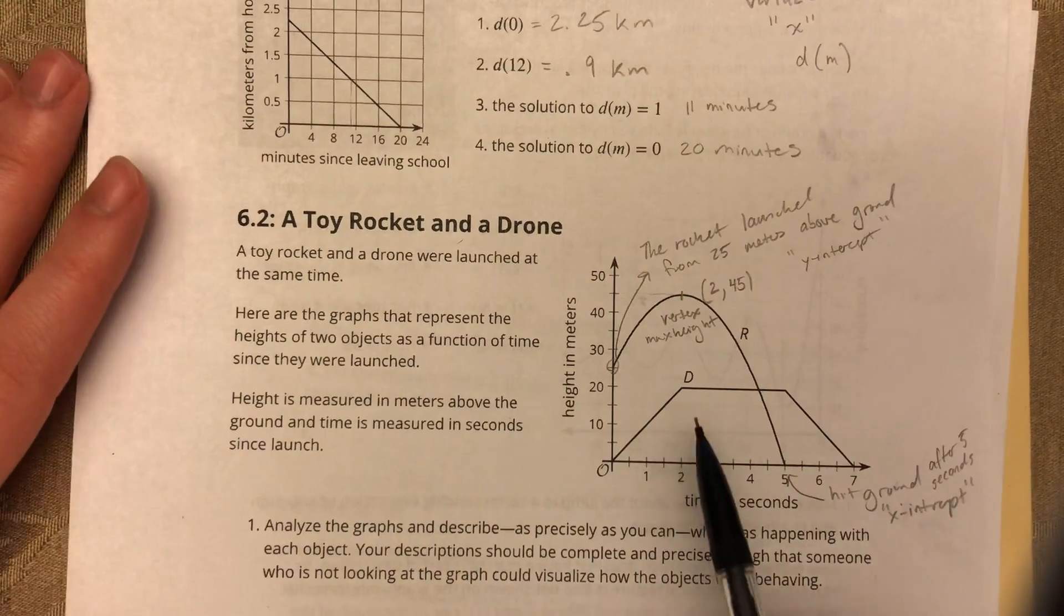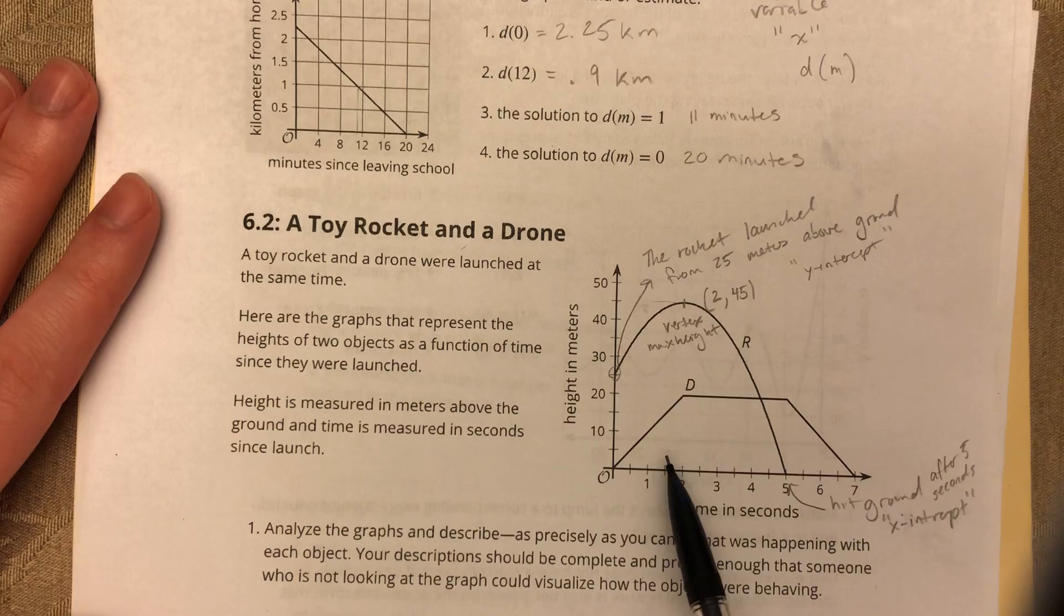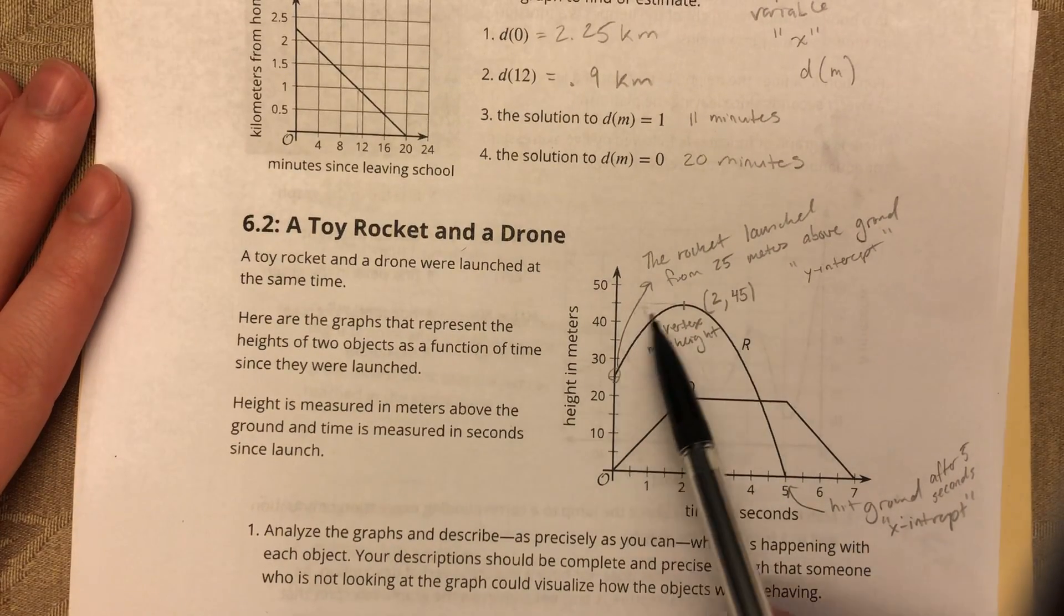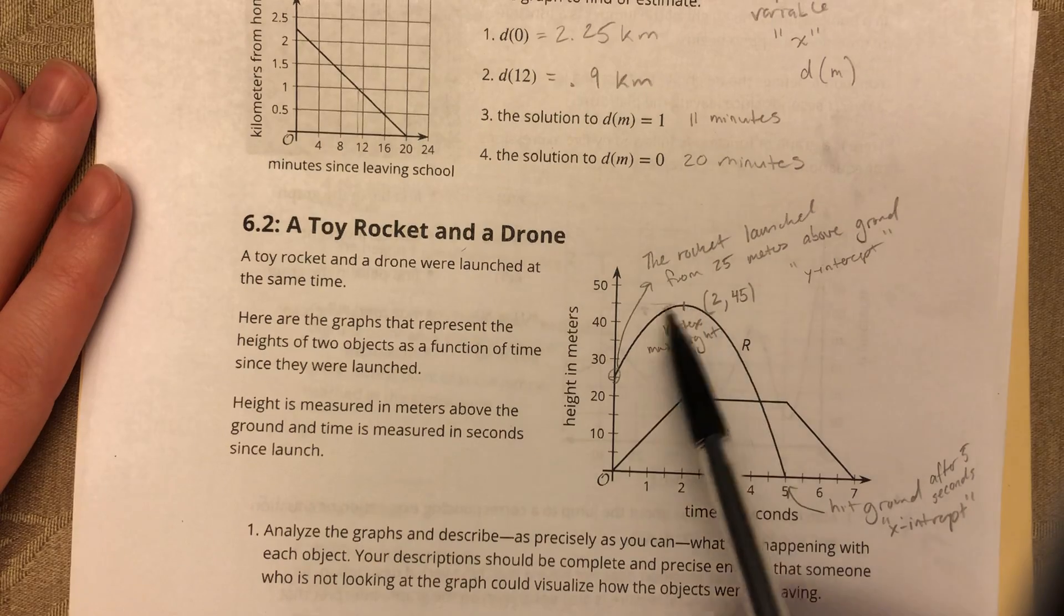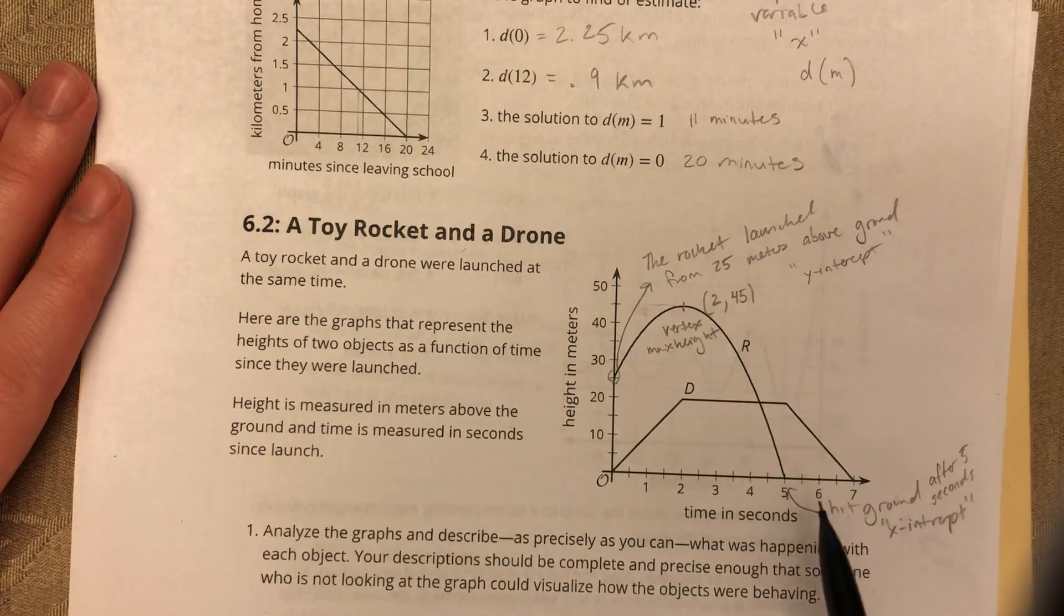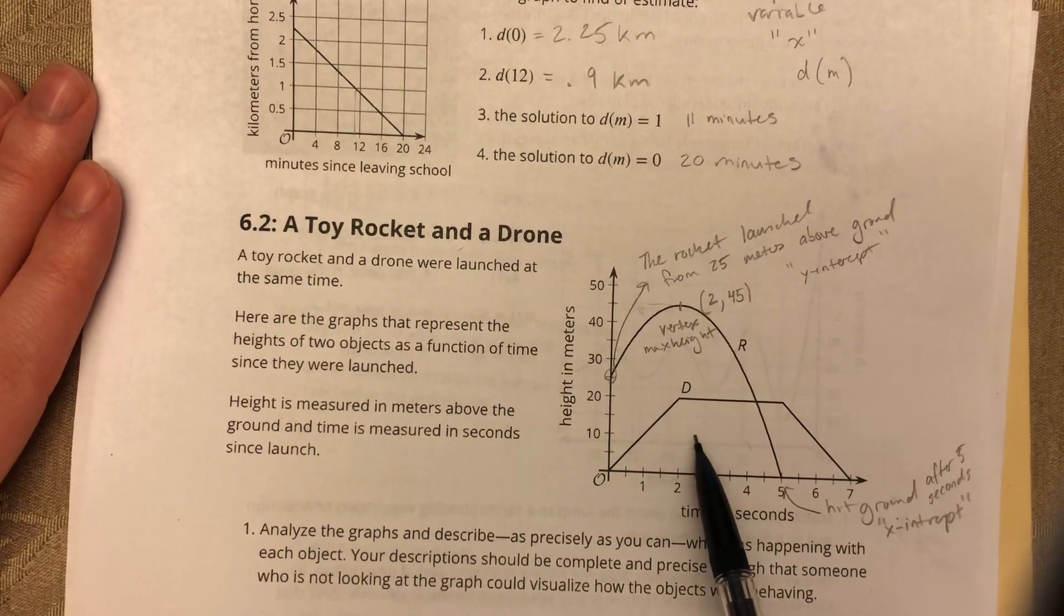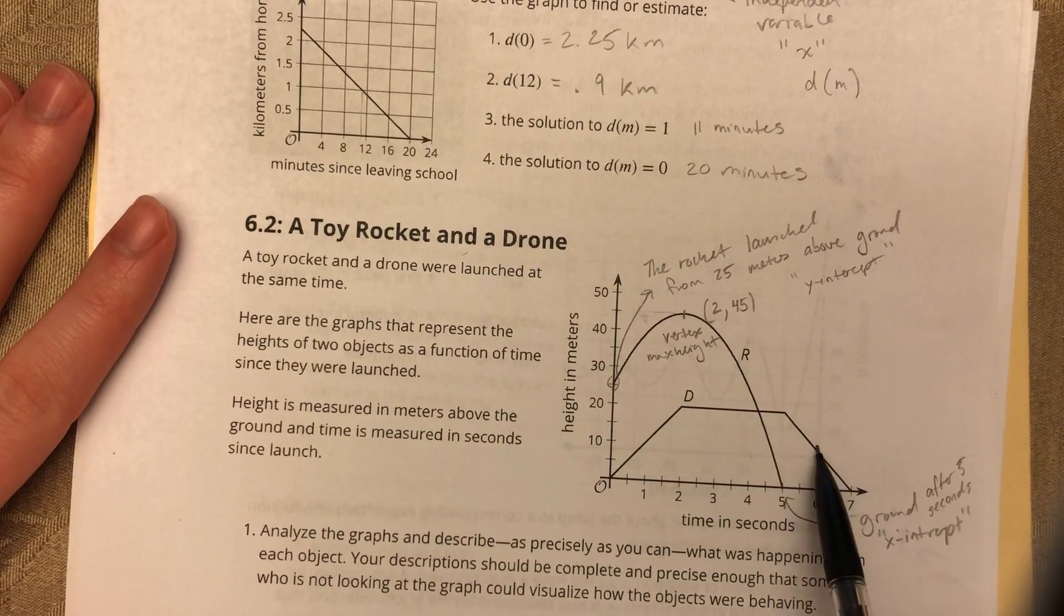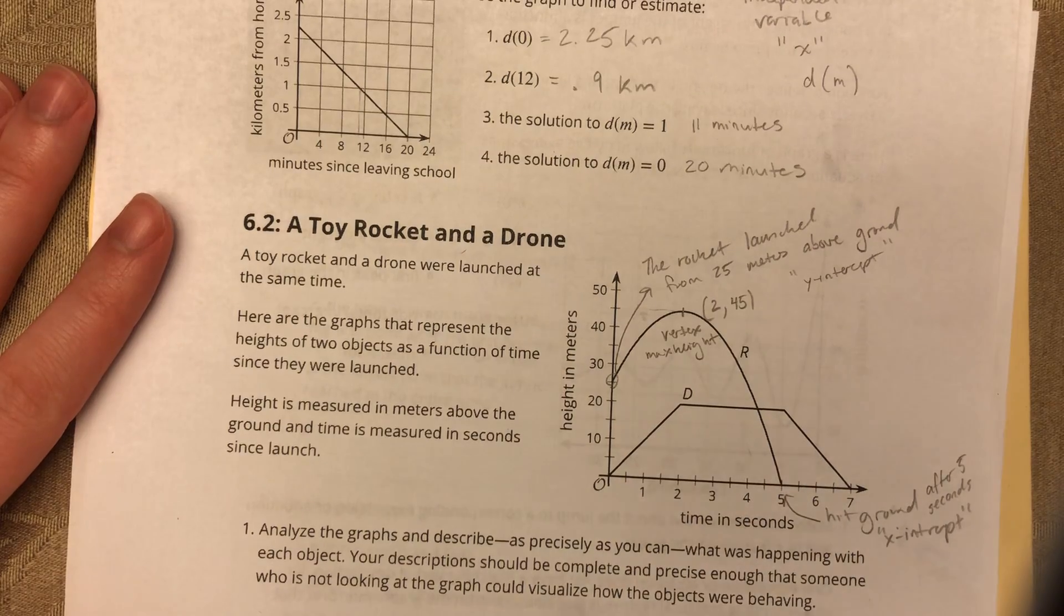Alright, so next we've got our drone. And, you know, we're used to seeing these parabolas when we deal with rockets. That's very much like our quadratics unit. This is a little bit different. We actually have not seen a function like this. But if we look at it, it's almost like we've got three different linear functions that make it up.